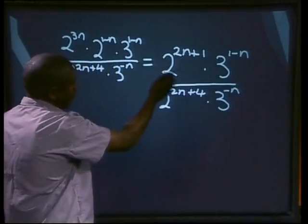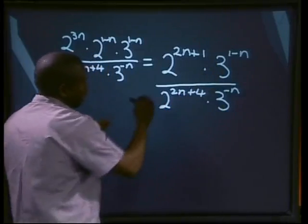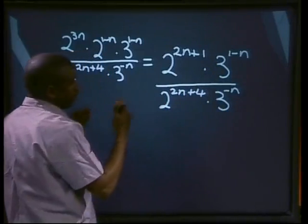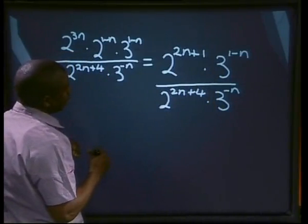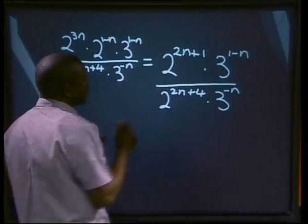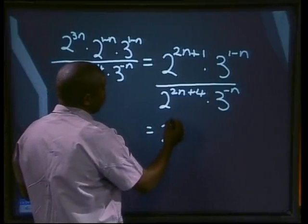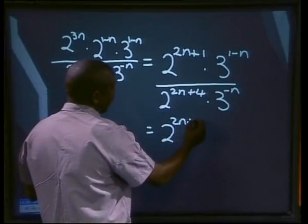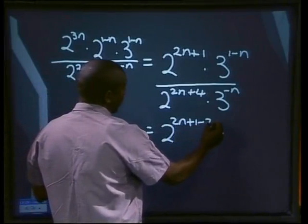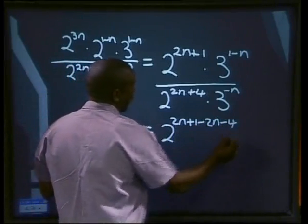The bases are the same there, and the bases are the same here, and we are dividing. We apply again our second law, which says if the bases are the same, we simply subtract the exponents. That will give us 2 to the power of 3n plus 1, you take away 2n and 4.